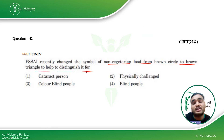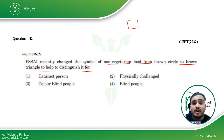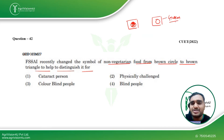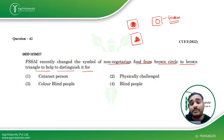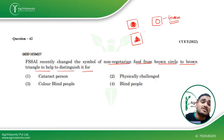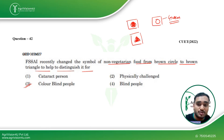Coming to the next question: FSSAI recently changed the symbol of non-vegetarian food from a brown circle to a brown triangle. Almost all of you will be aware that earlier non-veg food had the circle symbol and vegetarian foods had a green symbol — that green symbol remains the same. The brown symbol was changed to a triangle for colorblind people, who cannot distinguish between red, green, and blue shades. This was done so colorblind people are also aware of the ingredients in their food. Option 3 is the right answer.